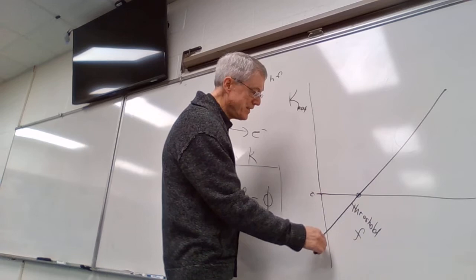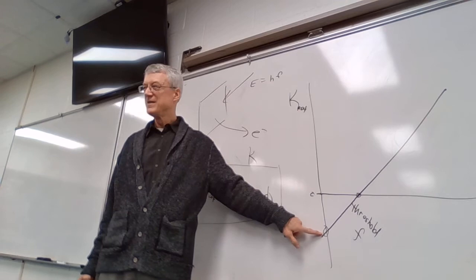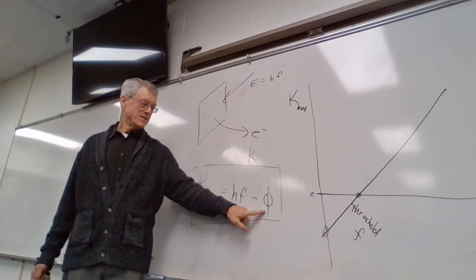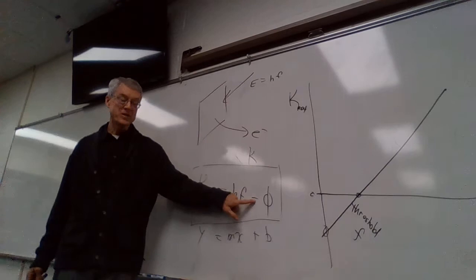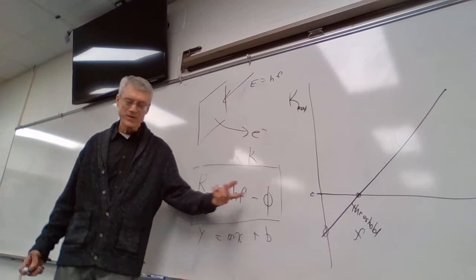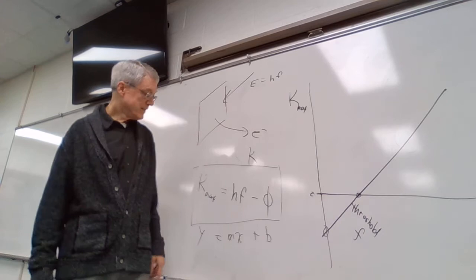If you extrapolated this straight line down to find the y-intercept, what would that be? That's the work function. This is y = mx + b. The work function is the b term — notice that in the equation it's subtracted, so on this graph it's always below zero, a negative y-intercept value. The work function itself is a positive number — the joules it takes to free the electron.